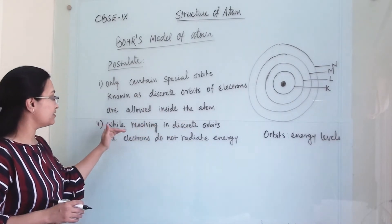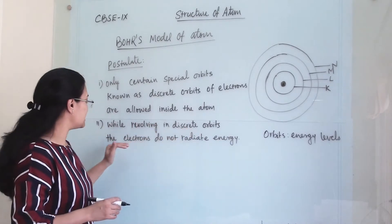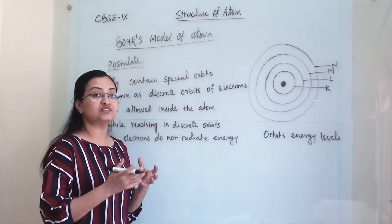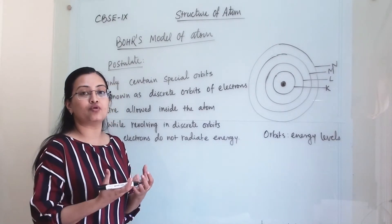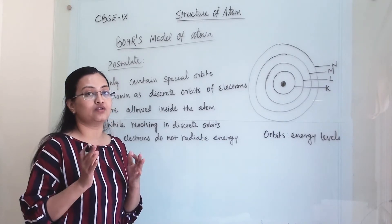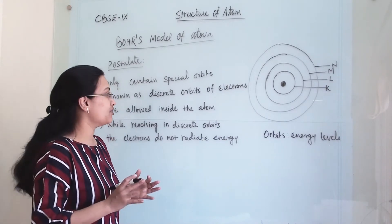Second, while revolving in discrete orbits the electrons do not radiate energy. He suggested that the atom is quite stable even though electrons are rotating around, they are not losing energy, they are not radiating any kind of energy.